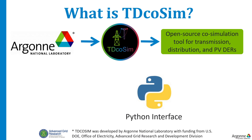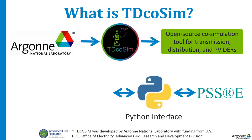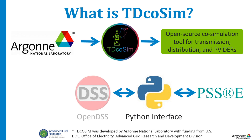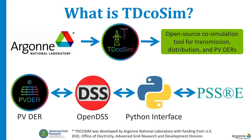TD-Cosyn is a Python-based co-simulation tool where you can create a model of the transmission system using PSSE. Then you can connect multiple distribution systems at various nodes of the transmission system using OpenDSS. And finally, you can connect multiple PVDERs at various distribution buses using the PVDER simulation utility.